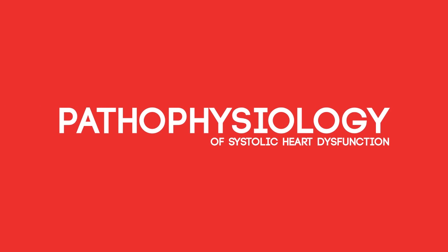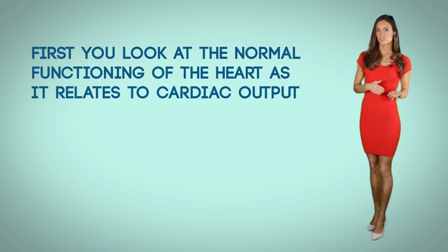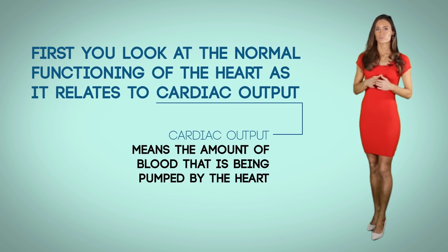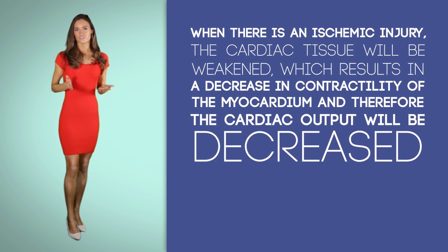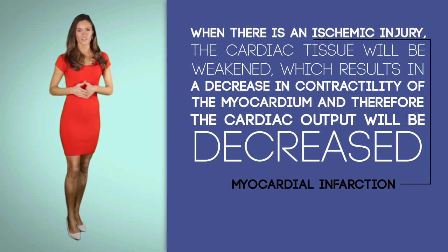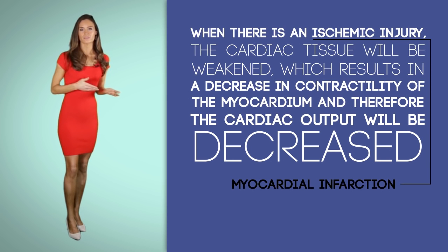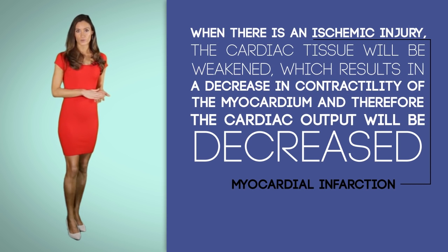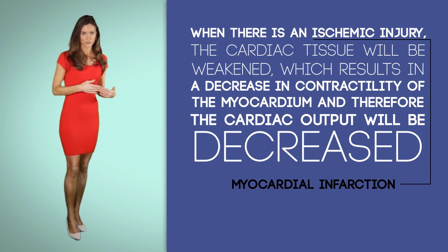Now let's look at the pathophysiology of systolic heart dysfunction. First, look at the normal functioning of the heart as it relates to cardiac output, which means the amount of blood that is being pumped by the heart. In a normal heart, this reflects normal cardiac output. When there is an ischemic injury, also known as myocardial infarction, the cardiac tissue will be weakened, resulting in decreased contractility of the myocardium, and therefore cardiac output will be decreased.